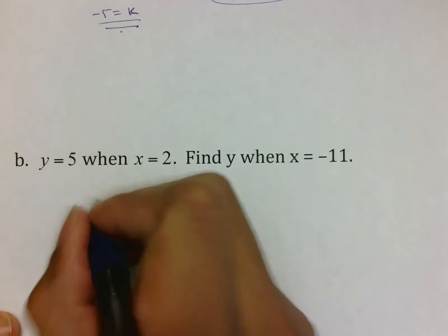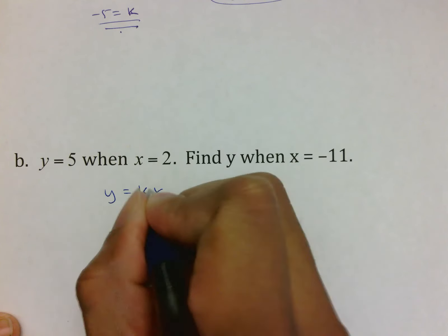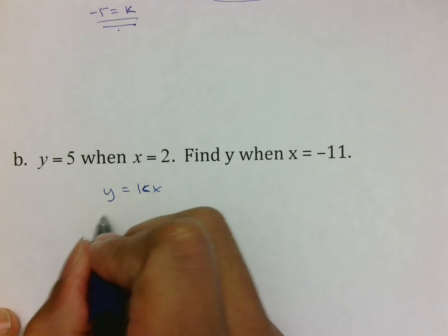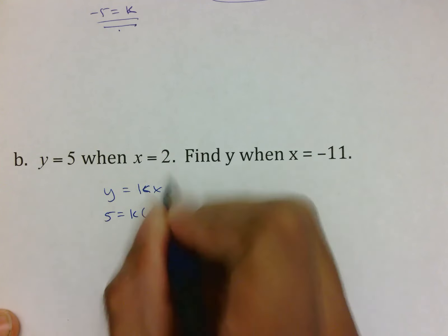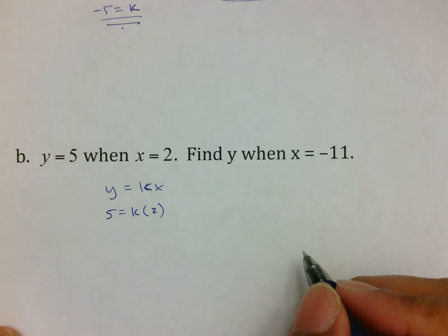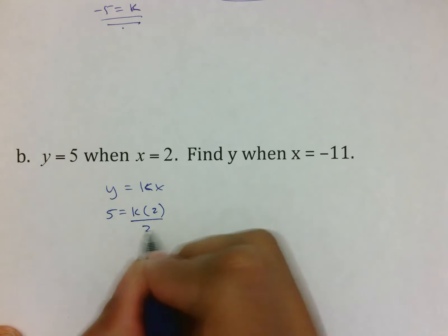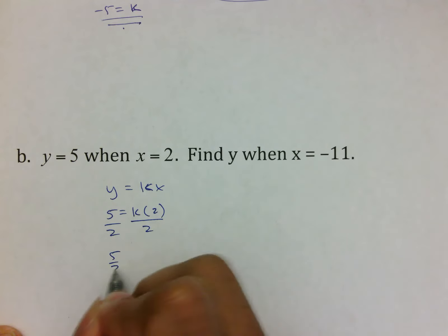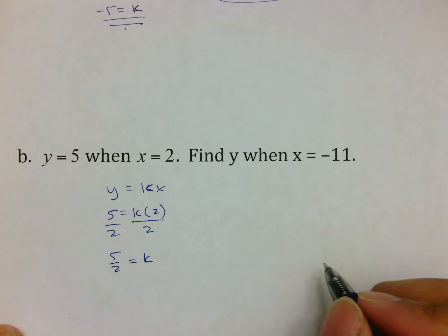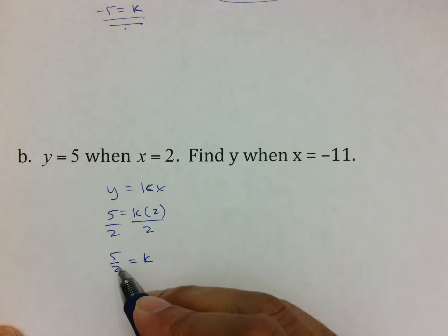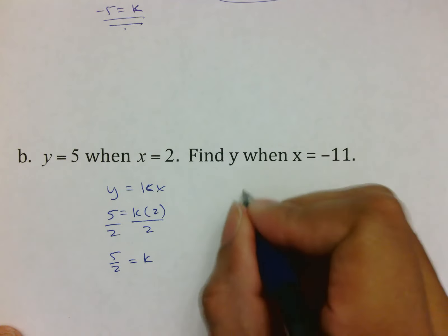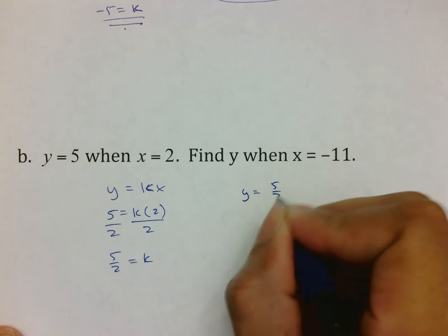Example B. Y varies directly. So we start with y equals kx. We then plug in what we have, which is 5 equals k times, in this case, it's 2. So now we find k by dividing by 2. We get the answer of 5 over 2 equals k. Yes, fractions exist. Once we have this k, we then plug it into the original formula.